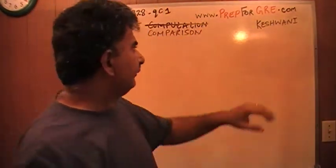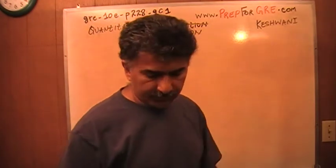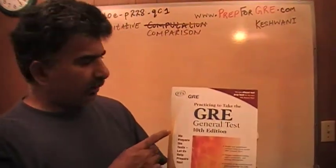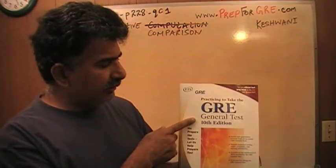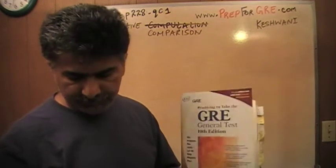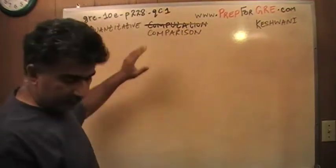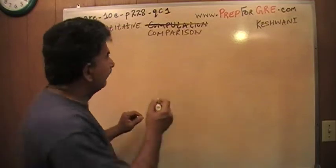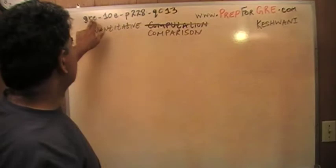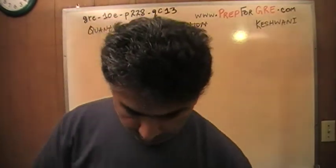Hello, my name is Keshwani. I have been solving math problems out of this book, practicing to take the GRE General Test, 10th edition. If you do not own this book already, purchase it immediately. The problem I'm about to solve is on page 228, number 13 — a quantity comparison question from the 10th edition of the GRE book I just showed you.